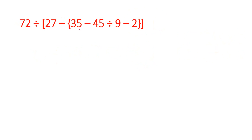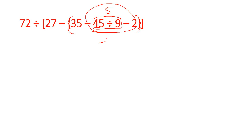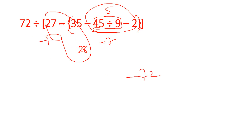Next question: 72 ÷ 27 − (35 − 45 ÷ 9) − 2. First solve the bracket. Inside the bracket: 45 ÷ 9 = 5, then 35 − 5 = 30. We solve this step by step using BODMAS.